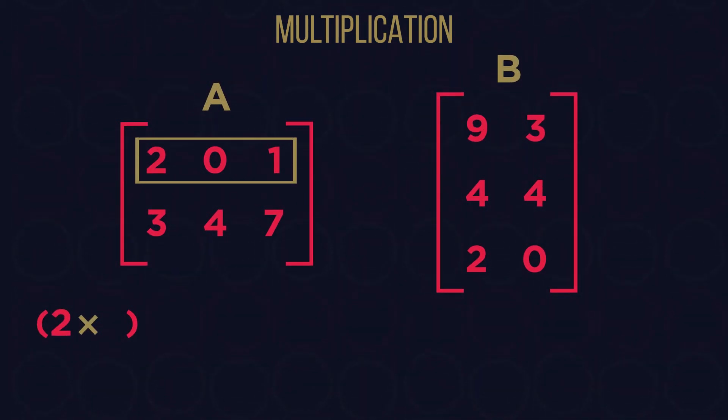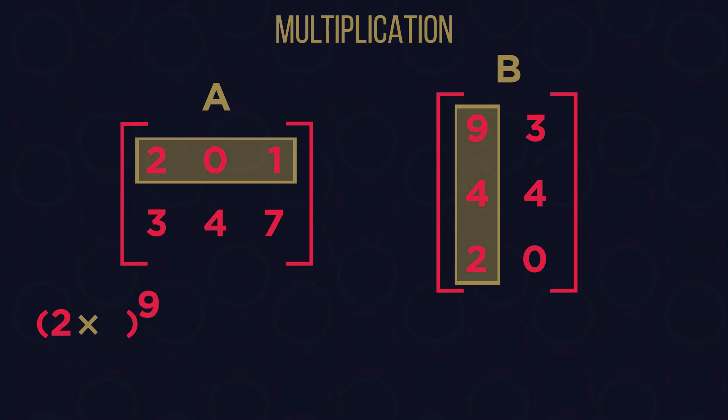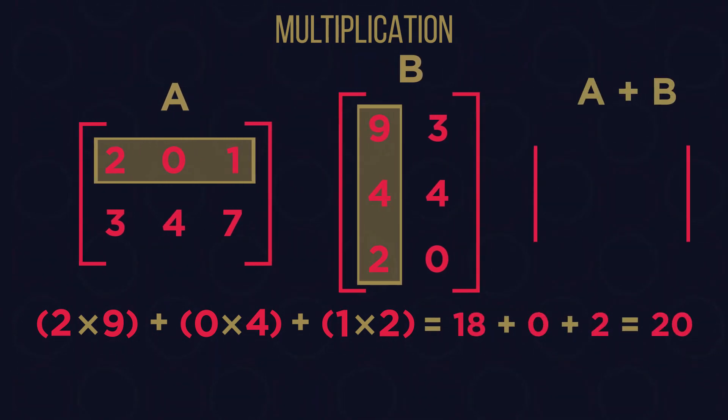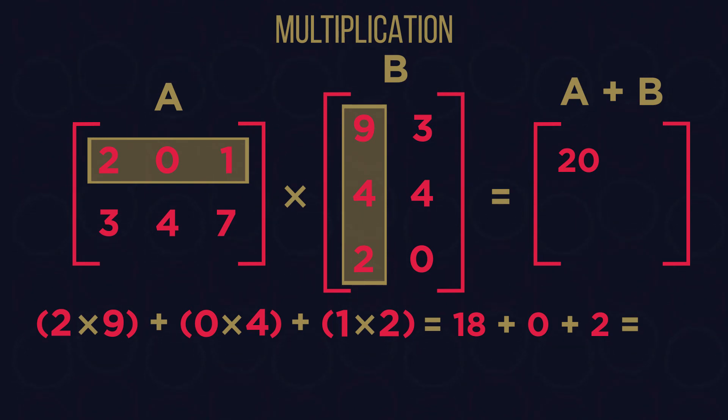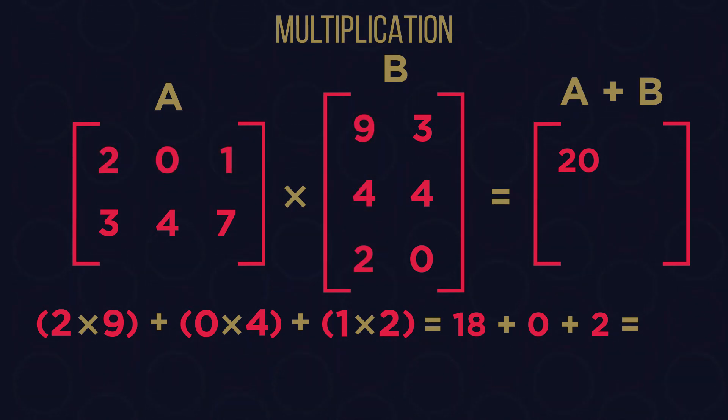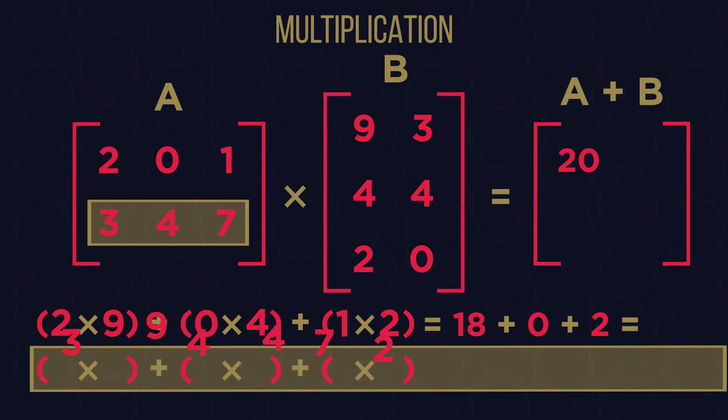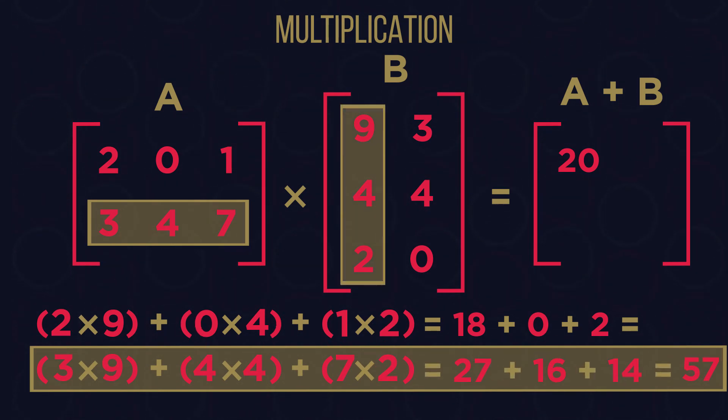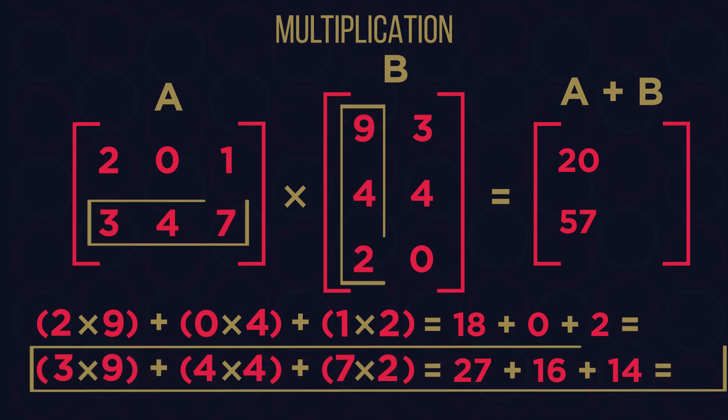We take the first element of the first row of matrix A and multiply it by the first element of the first column of matrix B. We then take the second and the third and do the same. After that, we add the results and place them in the first row, first column of the result matrix. We then move down and do the same for the second row of A and the first column of B, placing the results in the second row, first column of result matrix.